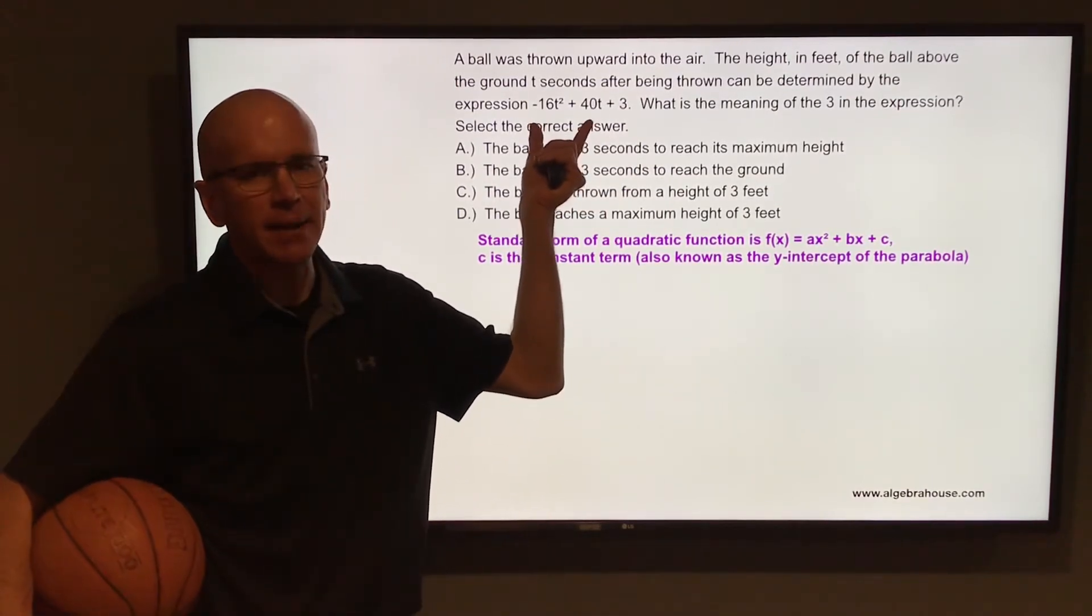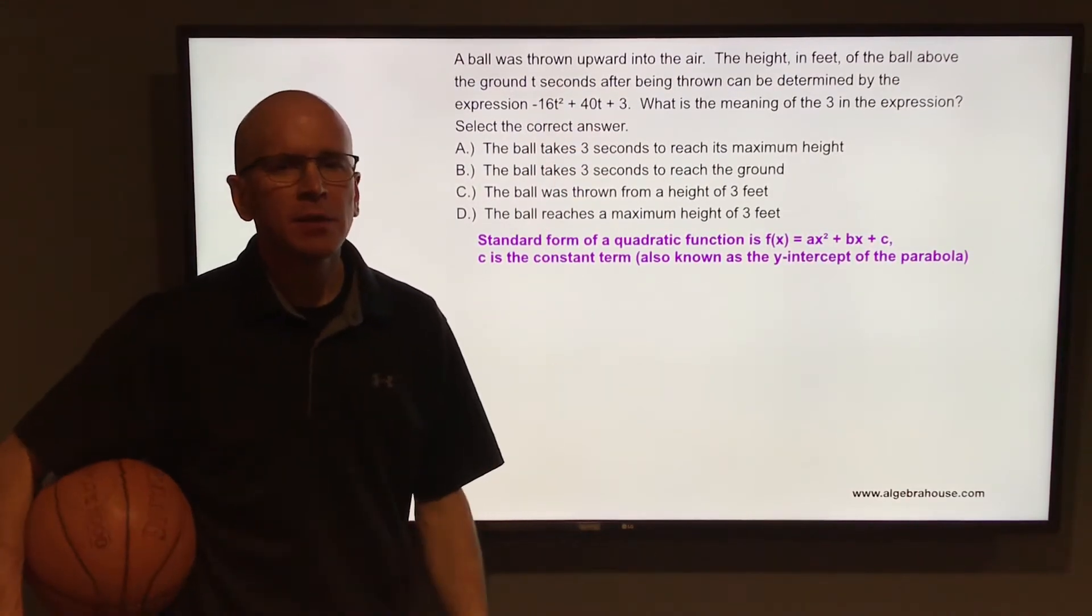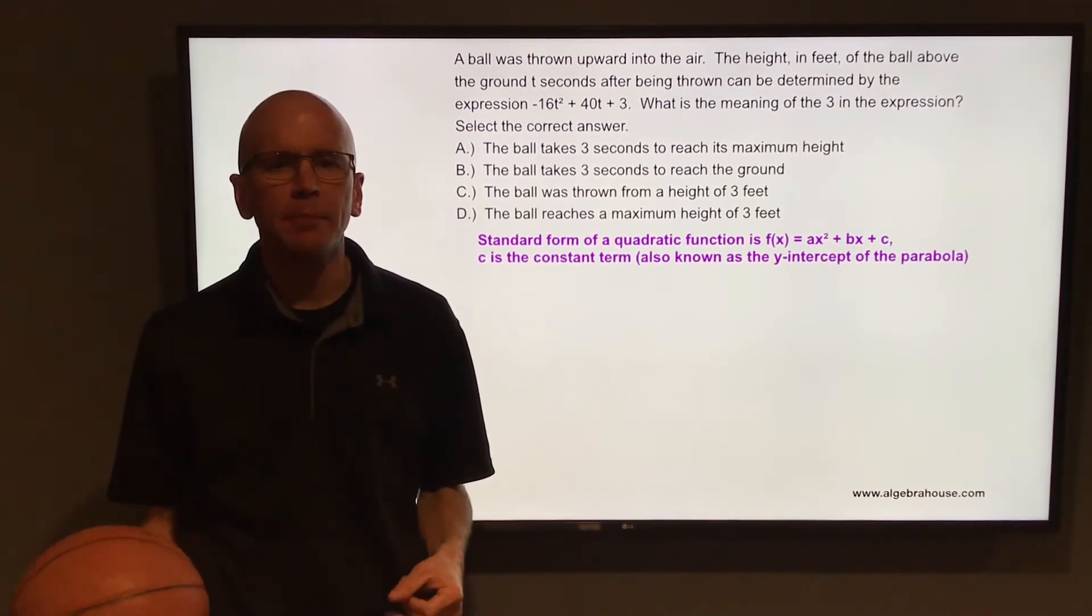So in this expression, t is the time. The height equals that negative 16t squared plus 40t plus 3. So when the time is 0, the height will be 3. Now imagine the flight of a ball when you throw it up in the air.